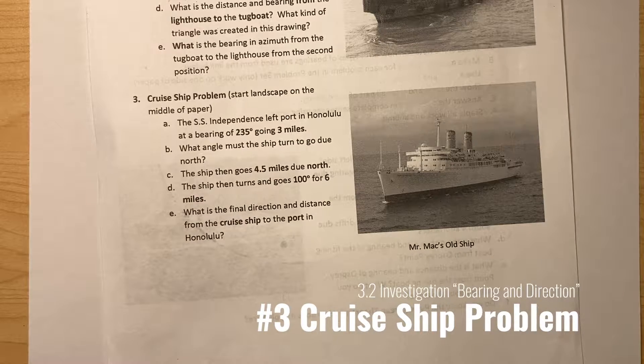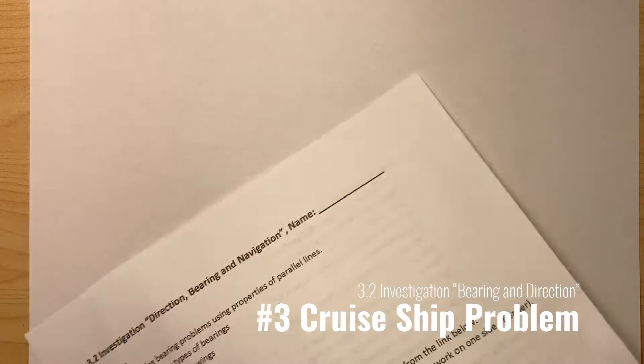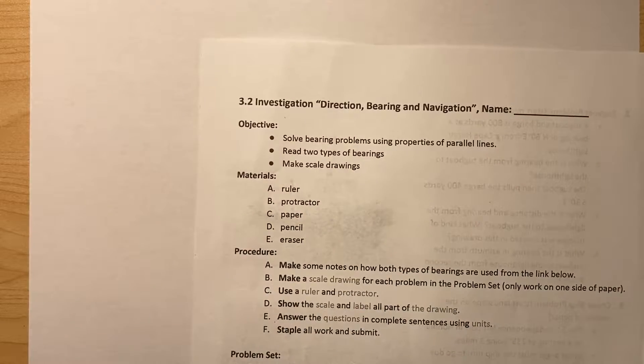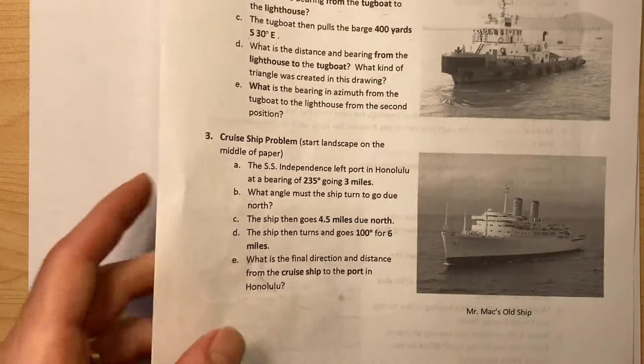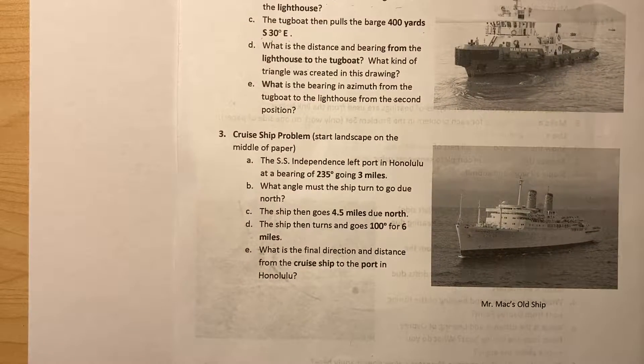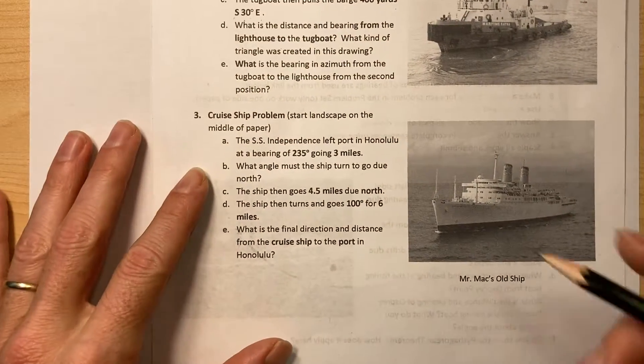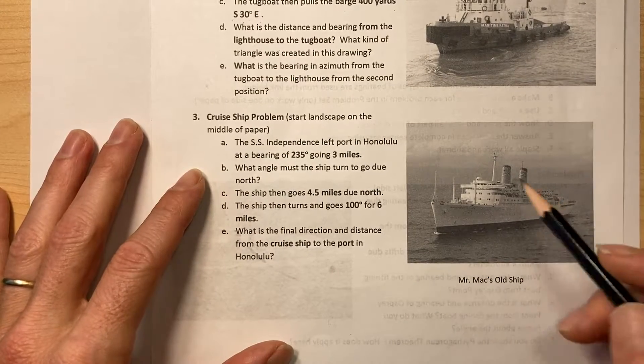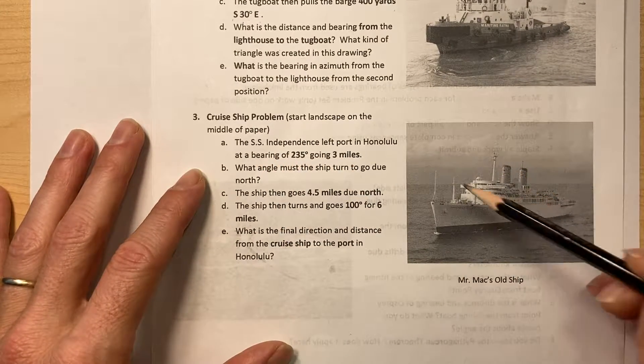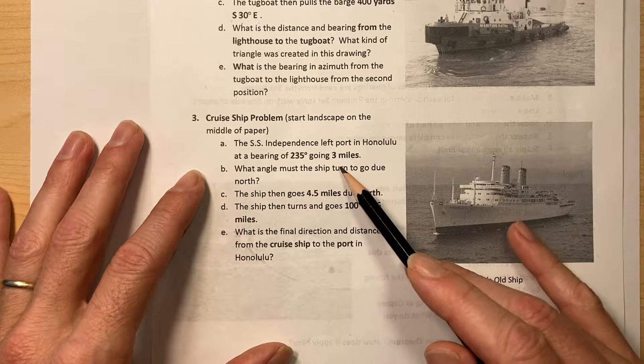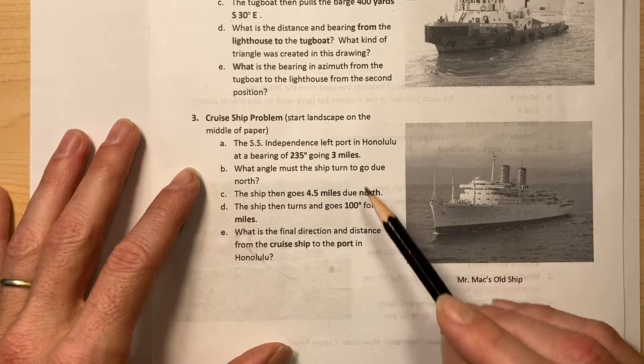All right, so let's take a look at this cruise ship problem from the 3.2 investigation on direction, bearing, and navigation. In this problem we're going to start in the middle of the paper. The SS Independence left port in Honolulu at a bearing of 235 degrees going three miles.